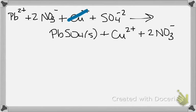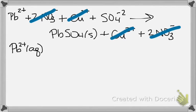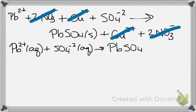So in this case, our copper is on both sides, our nitrates are on both sides, so your net ionic equation is going to be the lead ion, which was aqueous, plus the sulfate ion, which was aqueous, to make solid lead sulfate. Okay.